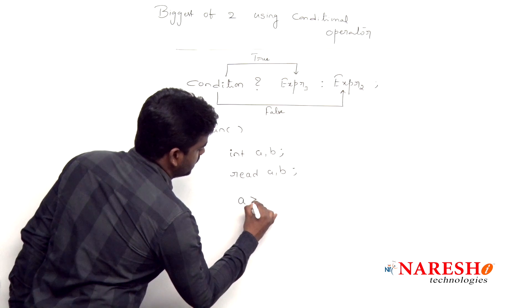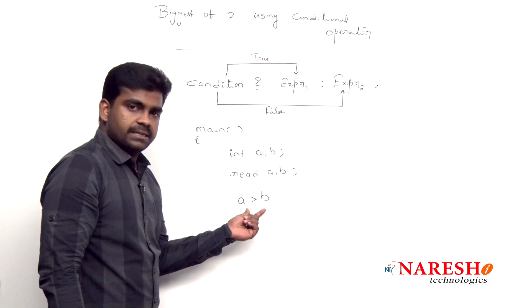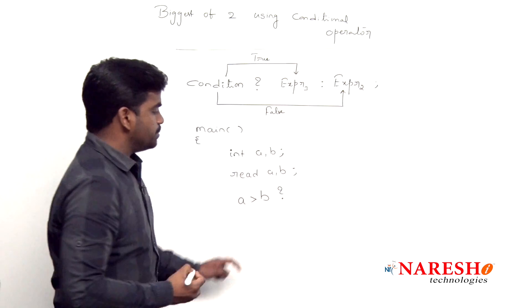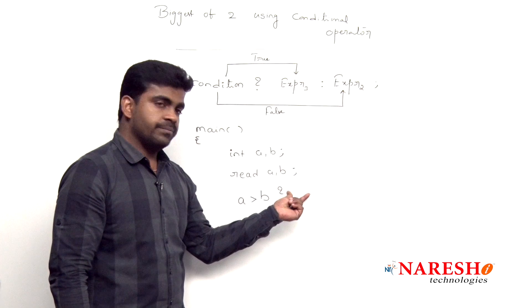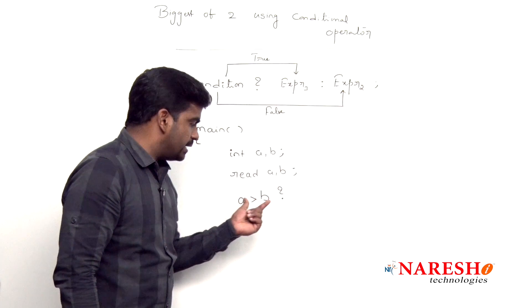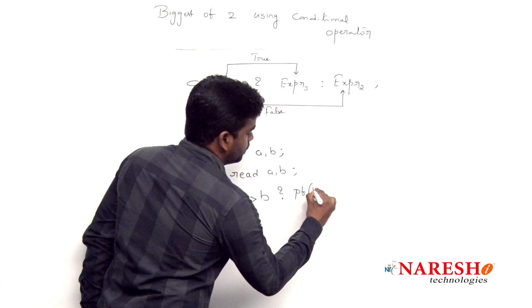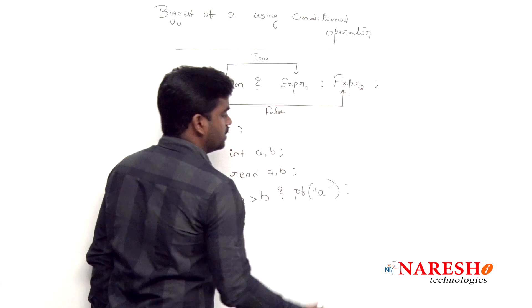Here the condition is a is greater than b, this is what condition. If the condition is true then expression 1 gets executed. So in place of expression 1, the true statement we have to write. What is the true statement? Just printf, printf a is big, you can elaborate that message.